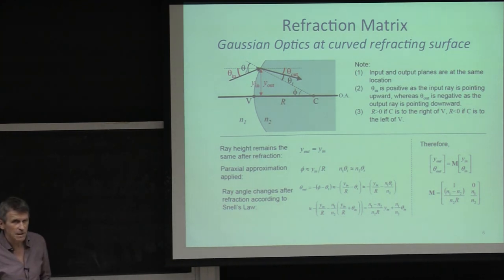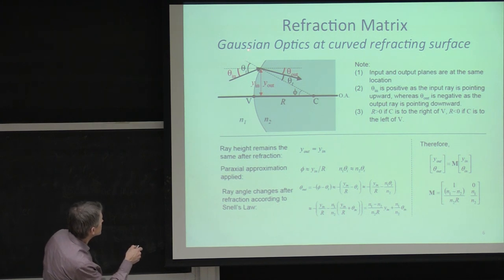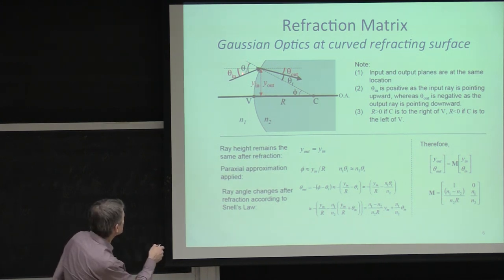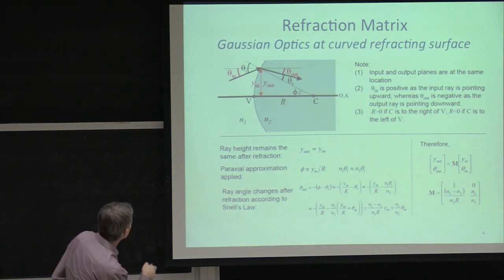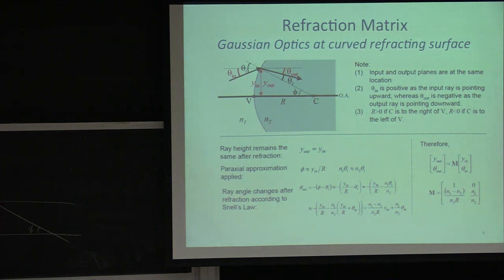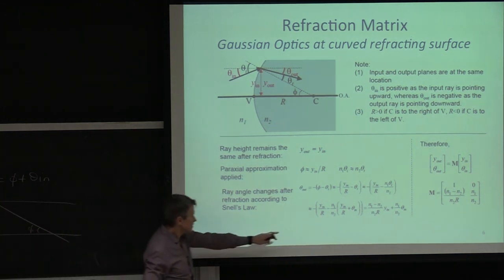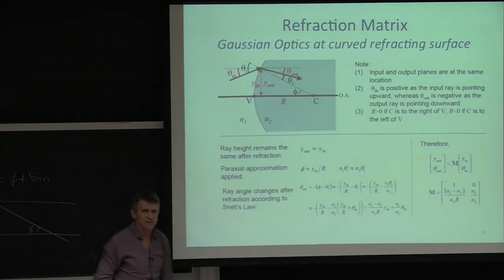Student question: how can you see that theta_incident equals phi plus theta_in? The instructor draws the geometry: there's phi from horizontal at the surface, there's the bisecting line, and theta_incident equals phi plus theta_in from that triangle. The rest follows from there.